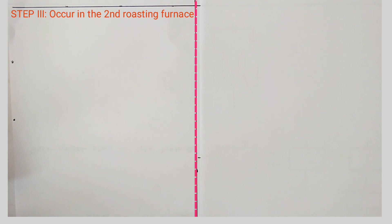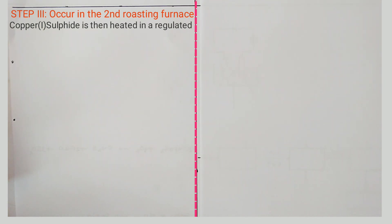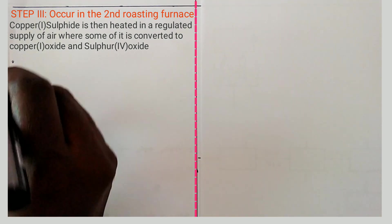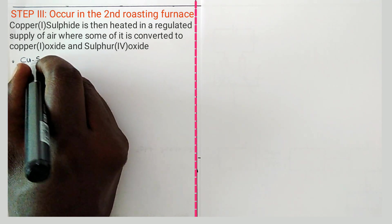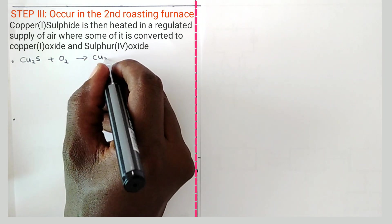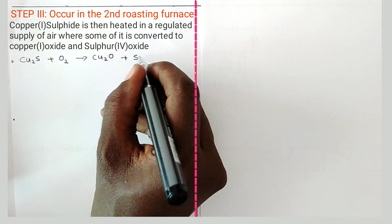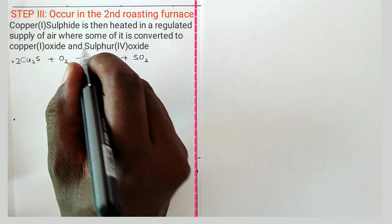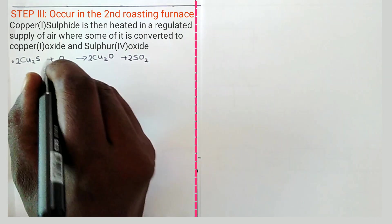Step three occurs in the second roasting furnace, whereby copper one sulfide is heated in a regulated supply of air. Some of it is converted to copper one oxide. The equation is: 2Cu2S + 3O2 → 2Cu2O + 2SO2. To balance: coefficients of 2, 3, 2, and 2 are placed; oxygen count balances to 6, requiring a coefficient of 3 for O2.